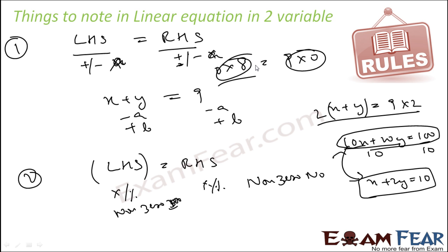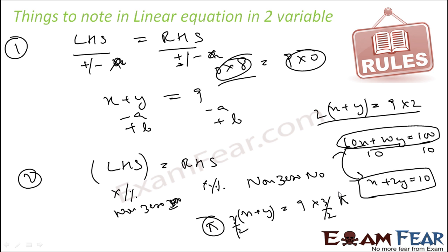To summarize: you can add or subtract any real number on both sides, and you can multiply or divide by any non-zero real number — rational or irrational. For example, you can multiply both sides of x plus 5 equals 9 by 3/2, or even by pi. This is a very critical concept for solving linear equation questions.